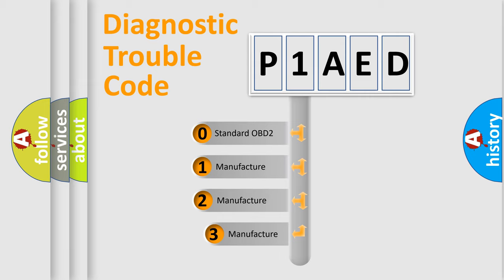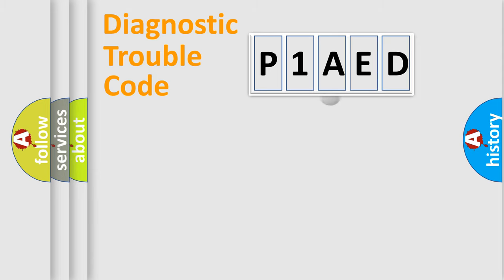If the second character is expressed as zero, it is a standardized error. In the case of numbers 1, 2, or 3, it is a manufacturer-specific expression of the car-specific error.